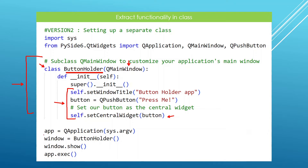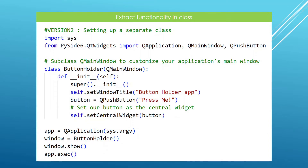Once we have the ButtonHolder class set up, we create an object of it in our main Python file. We create the application object, create the window as a ButtonHolder instance, show it, and kick off the event loop. This extracts the logic of setting up the window into the class. Some would still argue this is not maintainable because the button and window logic is still in the main Python file.